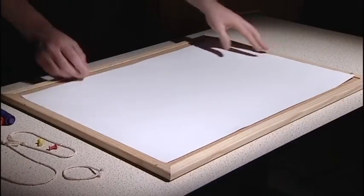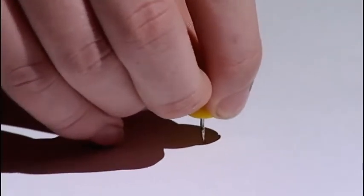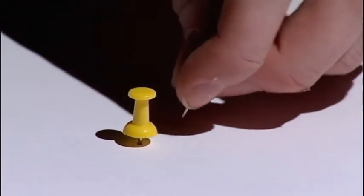To demonstrate ellipses, put a sheet of paper on a cork board and stick two pins close together near the centre of the paper.